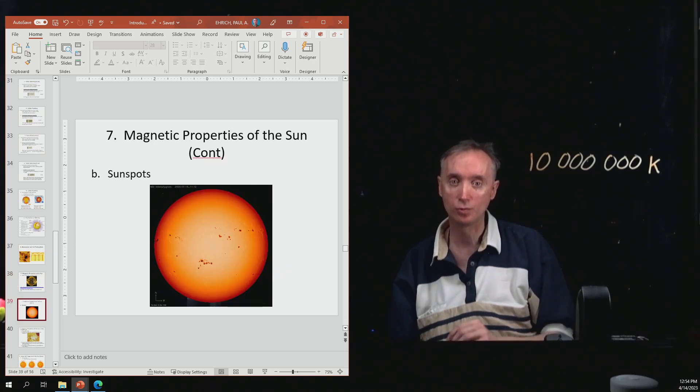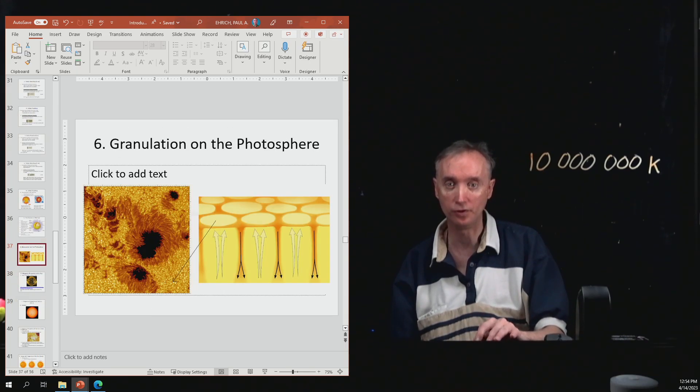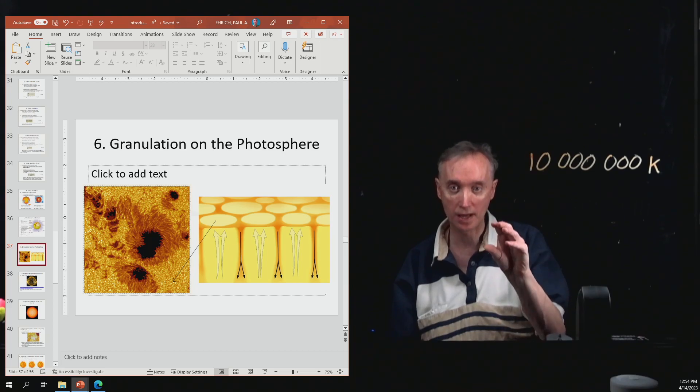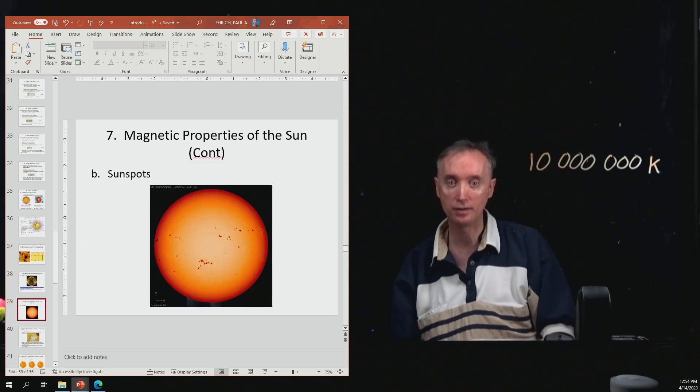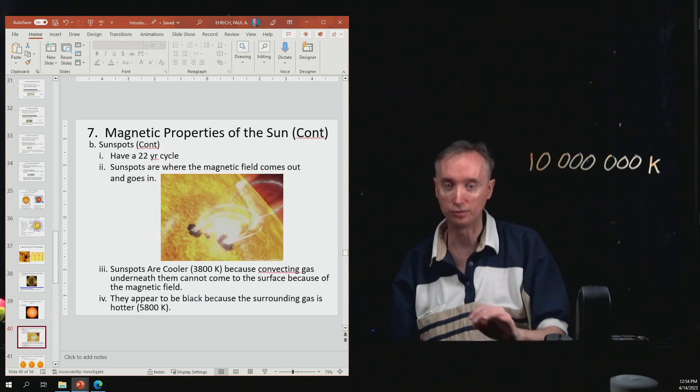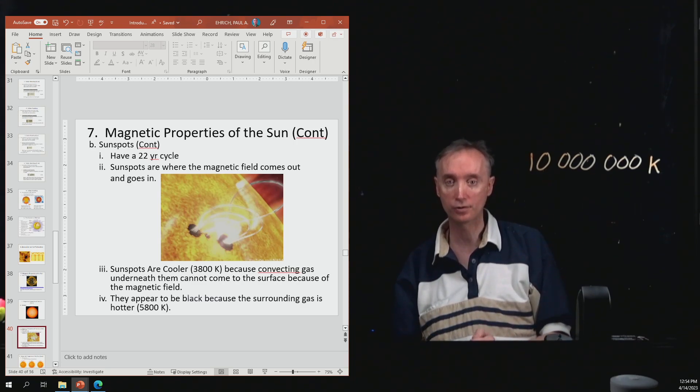Okay. Here is what sunspots look like on the Sun. So this was a close-up view of a sunspot, those black areas. And then this is what they actually look like. So you should know for the exam, what is a sunspot and how are they created.